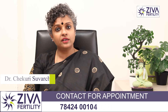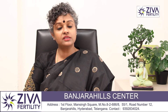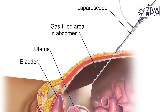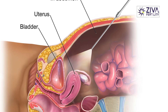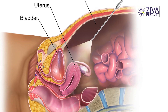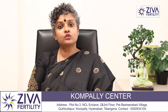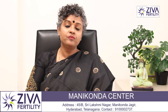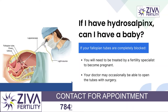The gold standard for assessing tubal blockages or addressing hydrosalpinx is the laparoscopy procedure. Laparoscopy is a simple procedure where small holes are made in the abdomen and a small telescope — a laparoscope — is passed in. Not only the abdomen but also the tubes and uterus can be assessed to see if the problem can be solved. It is the gold standard for hydrosalpinx.